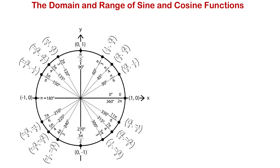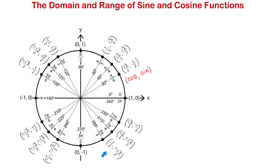To understand the domain and range of sine and cosine functions, we will look at the unit circle. This unit circle has a total of 16 angles, and each angle has a corresponding point on the unit circle. The x-coordinate of each point represents the value of cosine at the given angle, and the y-coordinate represents the value of sine.